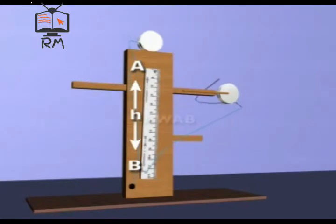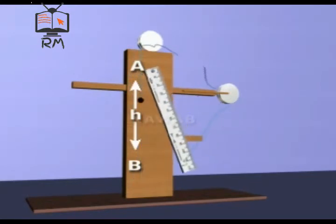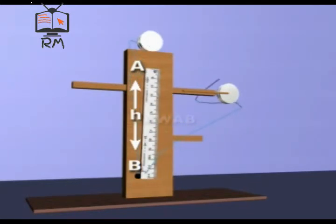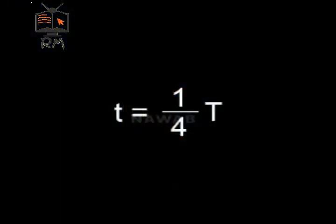The time at which the bar comes to its vertical position from its extreme position is 1 fourth of the time during which the bar completes one vibration. This time T is known as the time period of the bar. t equals 1 over 4 T.